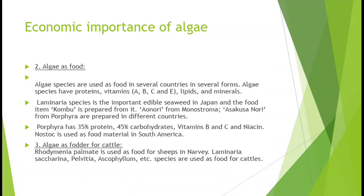Porphyra has 35% protein, 45% carbohydrates, vitamin B, C and niacin. Nostoc is used as food material in South America. China, Japan aadi deshon mein samudri ghaason ko bhojan ki roop mein prachin kaal se upyog kiya jaata tha. Pichle kuch dashakon mein vishwa ki jansankhya mein vriddhi ke karan, khaady samasya ke niwaran ke liye shewal atyantat mahattvapoorn siddh hui hai.